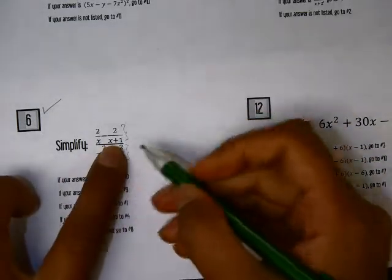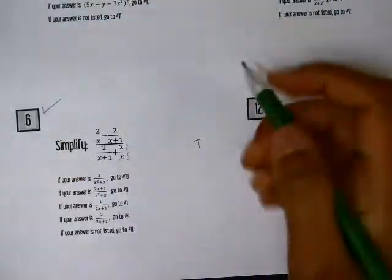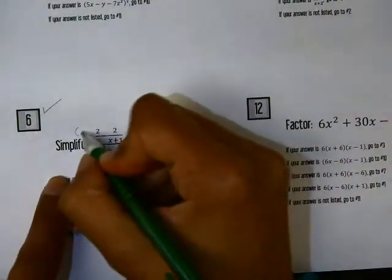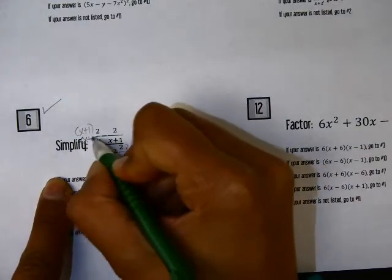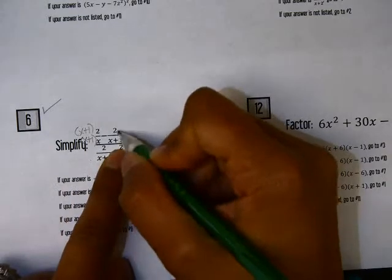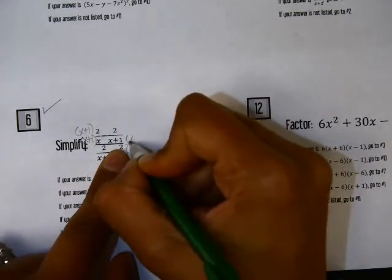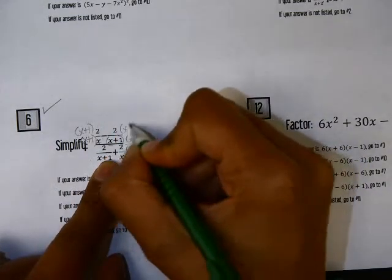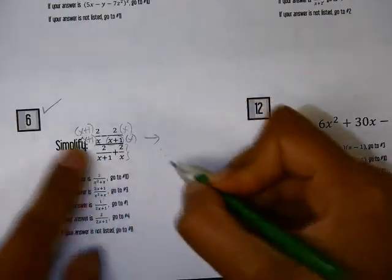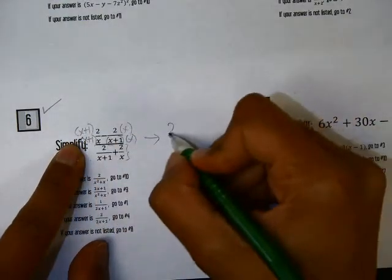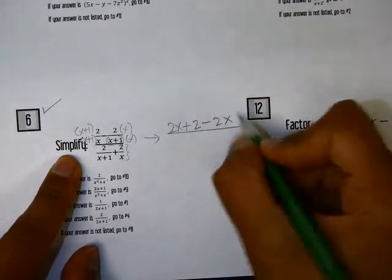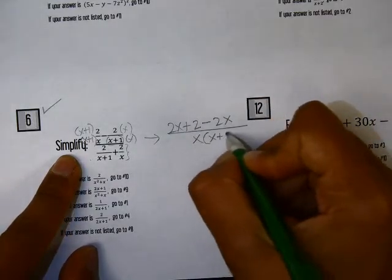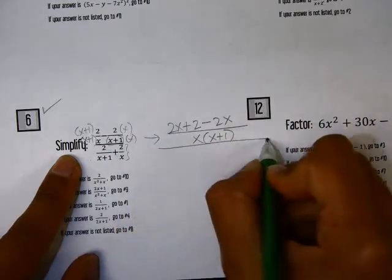So in the numerator here, we need a common denominator. The first fraction is missing the x plus 1, so I'm going to multiply the numerator and the denominator by x plus 1. Our other fraction right here is missing the factor of x, so I'm going to multiply that by x on the top and the bottom. So we end up with 2x plus 2 minus 2x over our common denominator, which is x times x plus 1, all over.